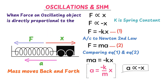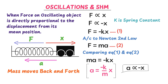Hence we define SHM, or simple harmonic motion: when the force on an oscillating object is directly proportional to its displacement from the mean position, it is called SHM. Also remember that in SHM, acceleration is also directly proportional to displacement. Therefore, in SHM, force is directly proportional to displacement and acceleration is also directly proportional to displacement. These are the two key properties of simple harmonic motion.